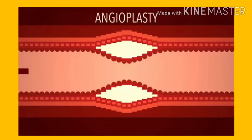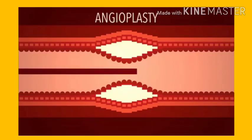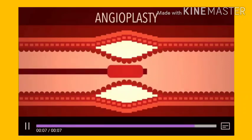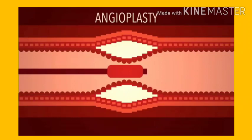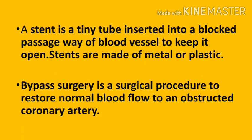Angioplasty is a procedure to restore the blood flow through the artery. The doctor threads a thin tube through a blood vessel in the arm or groin up to the involved site in the artery. The tube has a tiny balloon at the end. After angioplasty, a stent is placed in the narrow area of the artery to prevent narrowing after being widened. A stent is a tiny tube inserted into a blocked passageway of the blood vessel to keep it open, made of either metal or plastic.